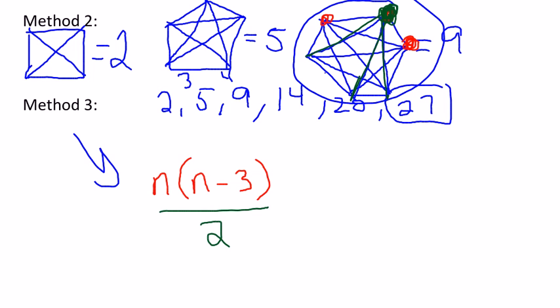So n times n minus three divided by two, which for our problem was nine times nine minus three, which is six divided by two, which is fifty-four divided by two, or twenty-seven.